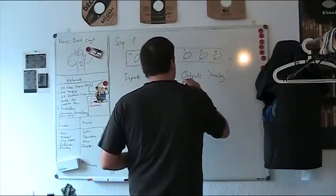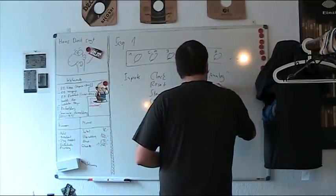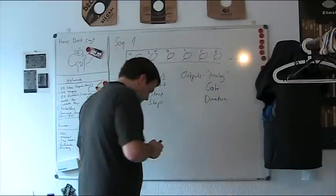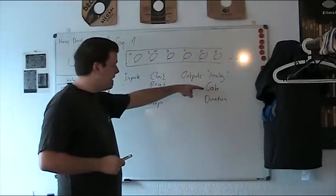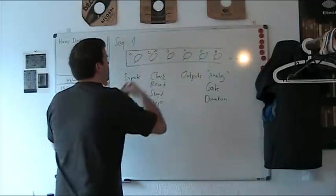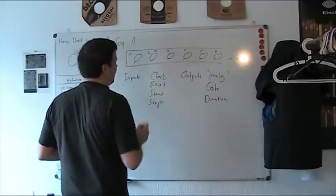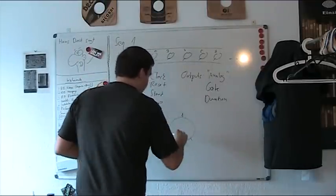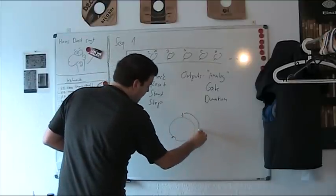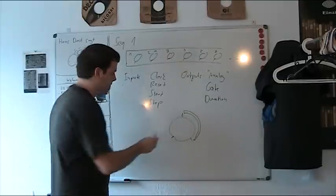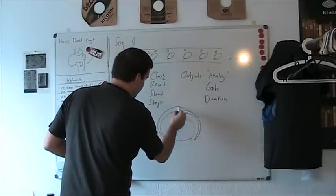Then it has two digital outputs, gate and duration. Gate just means every time when an active step is on the right side. So, here's the step. If it's turned on this side, gate will return one, and on this side here, gate will return one.